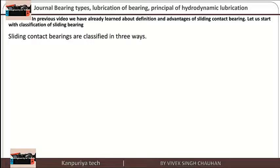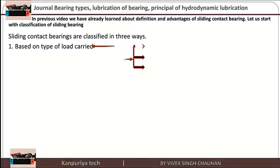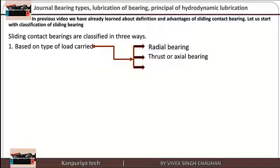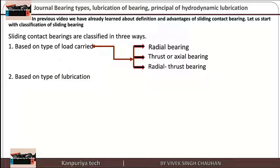Let us start the classification of sliding bearings. The sliding bearing is classified in three types. The first is based on type of load — whether it is radial load or axial load. The first subtype is radial bearing, in which the load is applied in radial direction. The second type is thrust or axial bearing, in which the force is applied in axial direction. The third one is a combination of radial and thrust bearing.